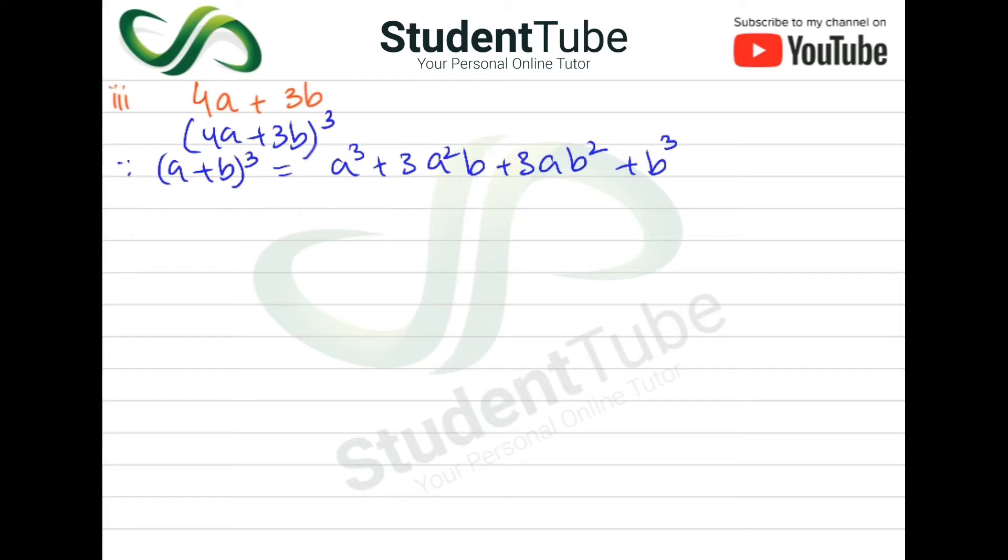Now this value will be according to this formula, so what will happen: a³ will come from (4a)³ plus 3a² will come from (4a)², b will come from 3b plus 3 again, and here a is 4a, b is 3b² plus b³ will come from (3b)³. 4 to the power 3 is 64, so 64a³ plus...